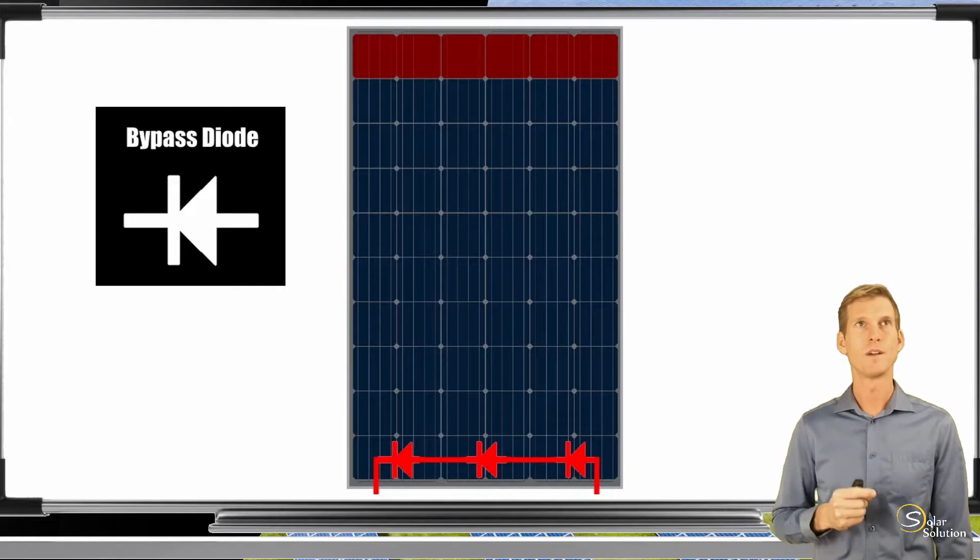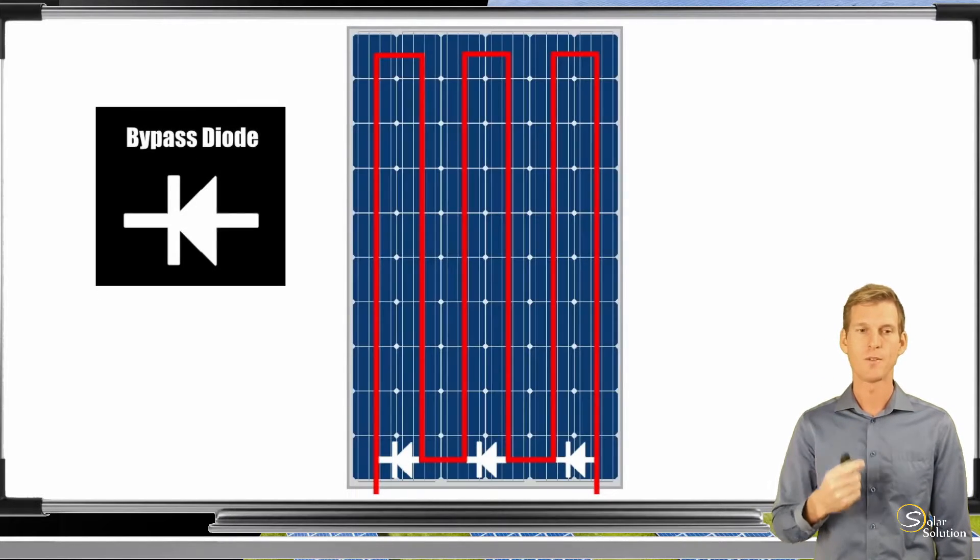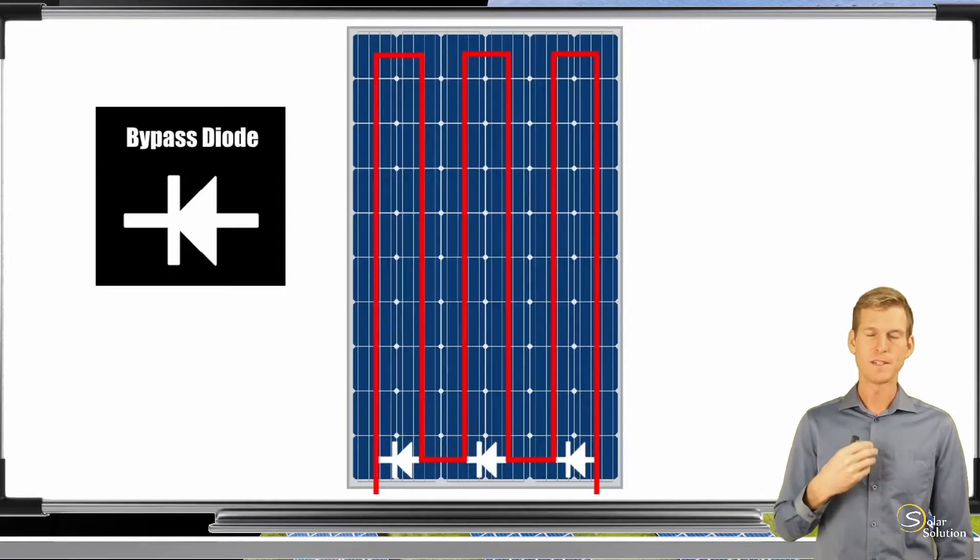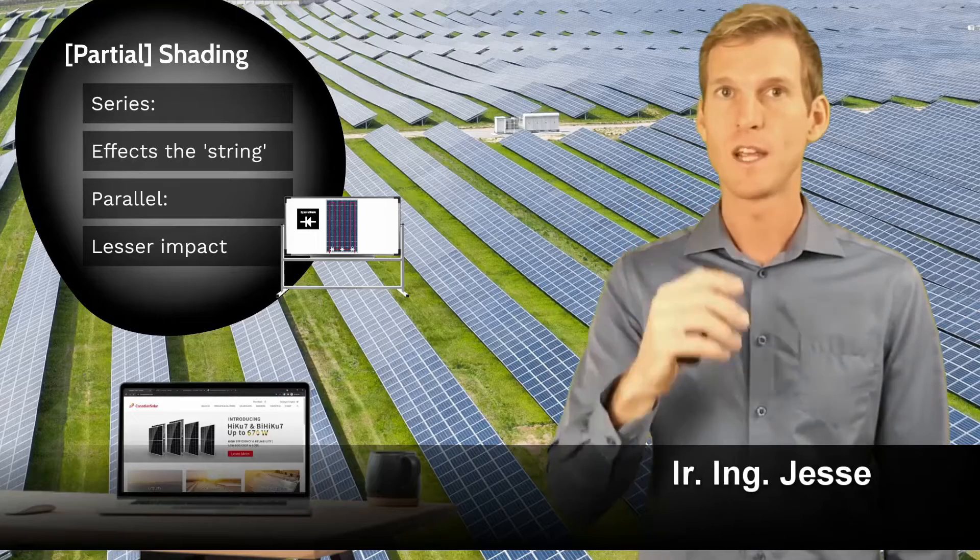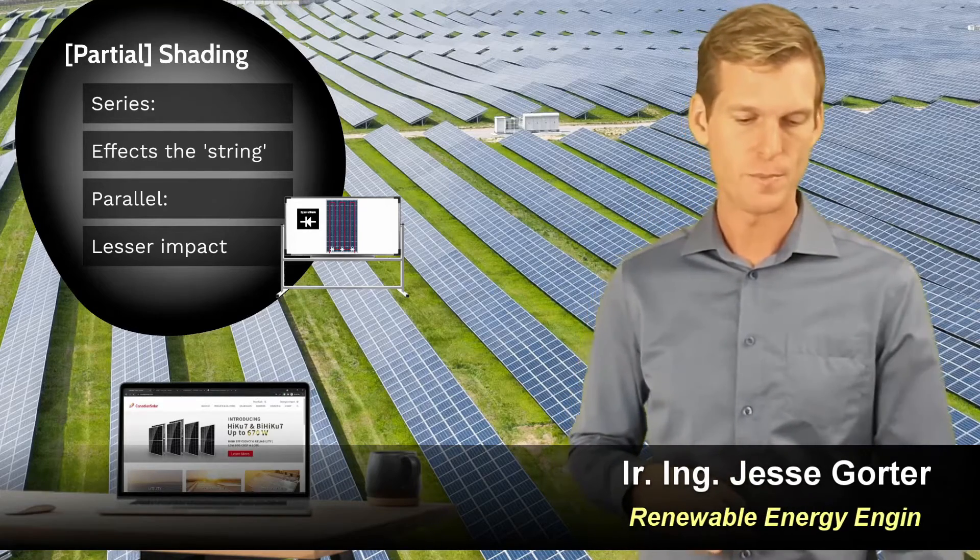So that was a quick but a bit more in-depth explanation of how the bypass diodes operate in your panel, what they do for you, and what you can expect depending on what kind of shading or malfunction you get in your panel.